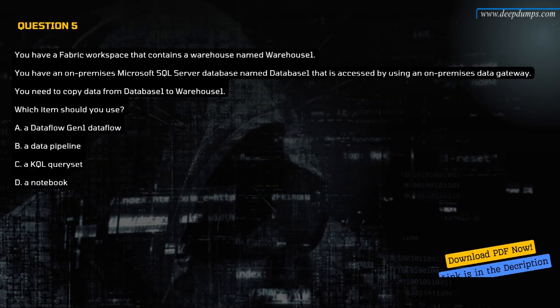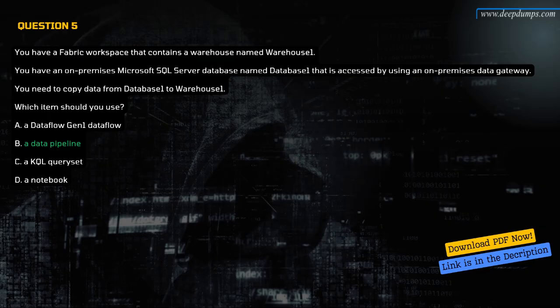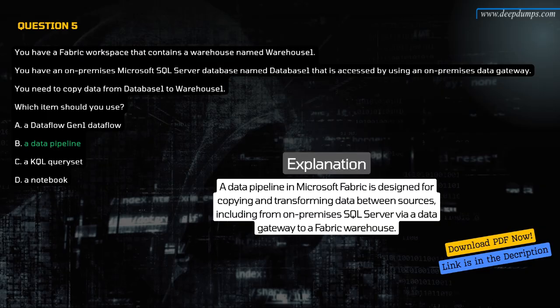Question 5. You have a Fabric workspace that contains a warehouse named Warehouse 1. You have an on-premises Microsoft SQL Server database named Database 1 that is accessed by using an on-premises data gateway. You need to copy data from Database 1 to Warehouse 1. Which item should you use? A. A data flow Gen 1 data flow. B. A data pipeline. C. A KQL query set. D. A notebook. The correct answer is B. A data pipeline. Data pipelines in Fabric can copy data from on-premises SQL Server through a gateway into the warehouse efficiently and securely.